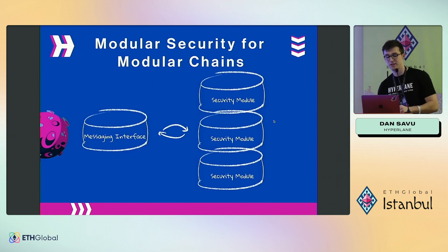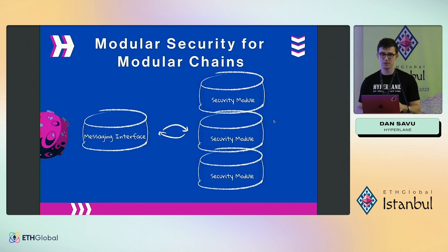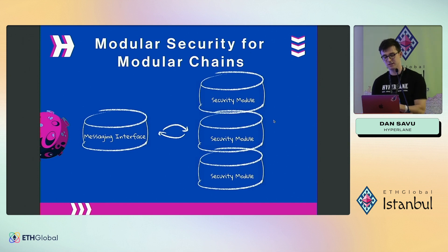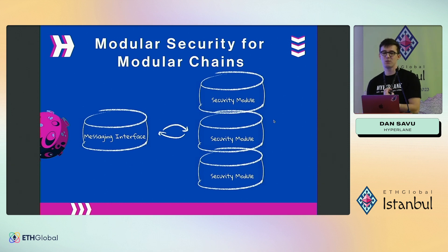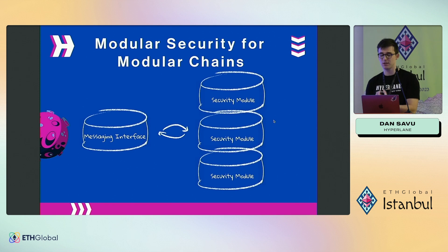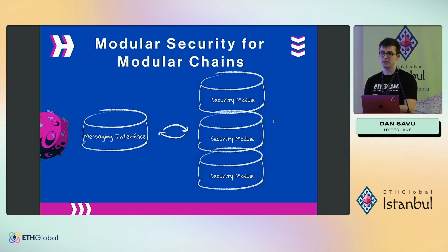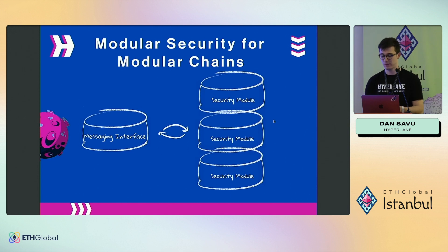The first innovation Hyperlane brought about is decoupling security modules from the messaging interface. All you have to do is integrate with a Hyperlane contract, and your message can have its security module decided dynamically based on who the recipient is, the content of the message, and so on.